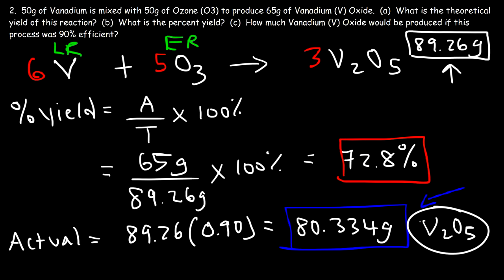Hopefully this video gave you a good understanding of how to calculate the theoretical yield, percent yield, and even the actual yield if you're given the percent yield. If the question says the process is 90% efficient, they're saying the percent yield is 90% and asking for the actual yield. That's it for this problem — thanks for watching and have a good day.